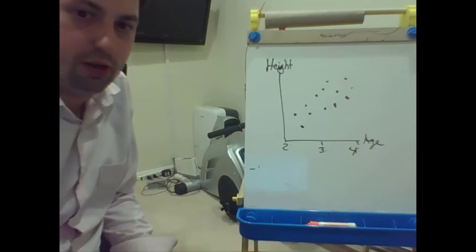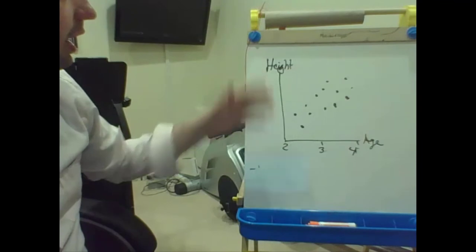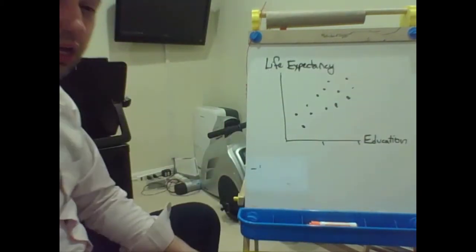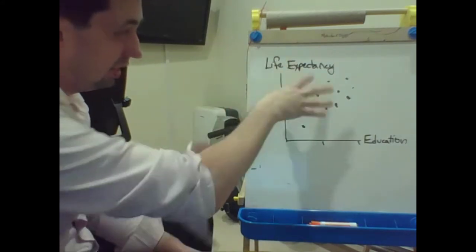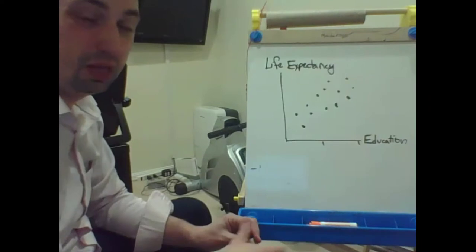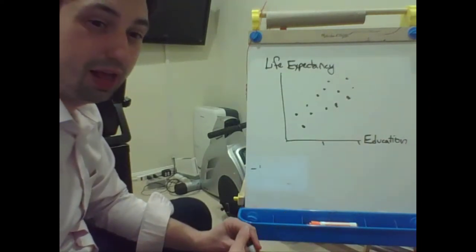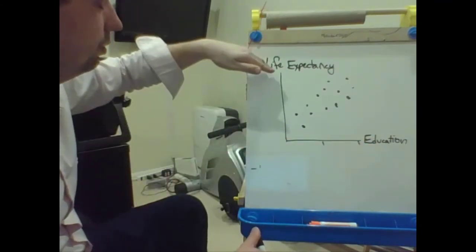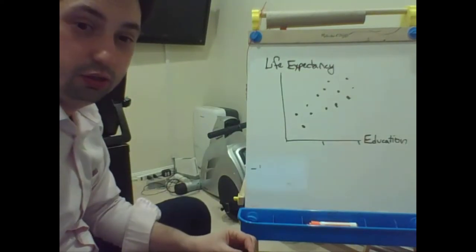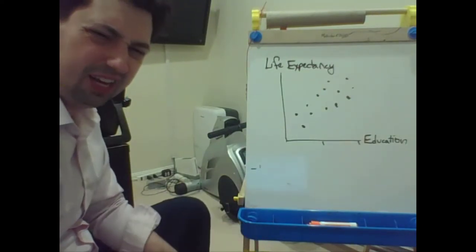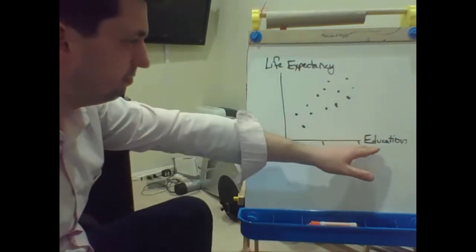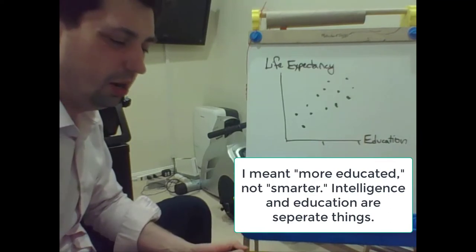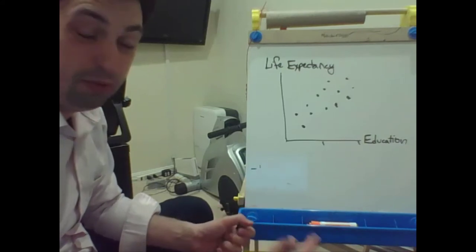When we see correlations, people typically want to make a connection. In the age and height case, it's logical — age causes height. But it doesn't have to be. Consider countries as elements: plot average years of schooling on one axis and life expectancy on another axis. We would get a positive correlation. Does that mean that if people get smarter, that causes them to live longer? Maybe they're smart enough to avoid problems, or more likely to wash their hands.